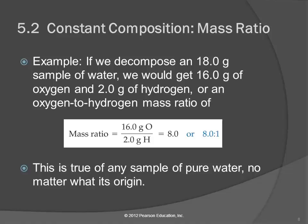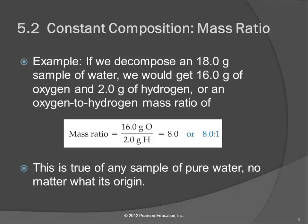We can look at the mass ratio of the elements in a compound. For oxygen and hydrogen in water, if we look at an 18-gram sample of water, 16 grams of that would be oxygen and 2 grams would be hydrogen. So the ratio is 16 grams of oxygen to 2 grams of hydrogen, which gives us a ratio of 8, or 8.0 to 1. That's going to be true of any sample of water. You could use that to predict — if I had 500 kilograms of water, how much would be oxygen? Or if I had 500 kilograms of oxygen, how many kilograms of hydrogen would I have?